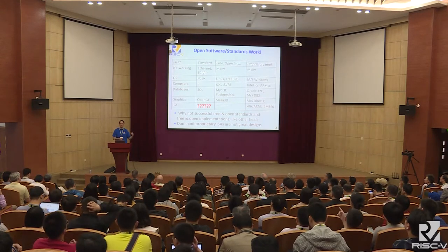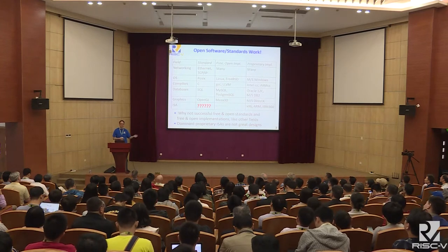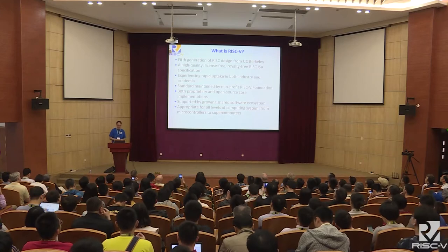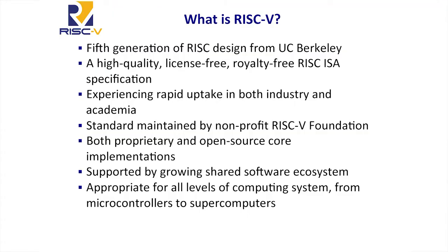The other amazing thing is how bad the industry standard designs are as instruction sets — they're just not a very good design. So what is RISC-V? As mentioned, this is the fifth generation of RISC architectures from UC Berkeley — that's why it's called RISC-V. It's a high-quality design, it's license-free and royalty-free. Anybody can use this ISA without paying anybody any money. There's a lot of uptake in both industry and academia. RISC-V itself is a standard now maintained by the RISC-V Foundation. The important thing to realize is RISC-V is not an open source processor — it's an open specification. The specification, because it's open, enables you to have open source processors, but it also enables proprietary implementations. The software ecosystem is growing really quickly.